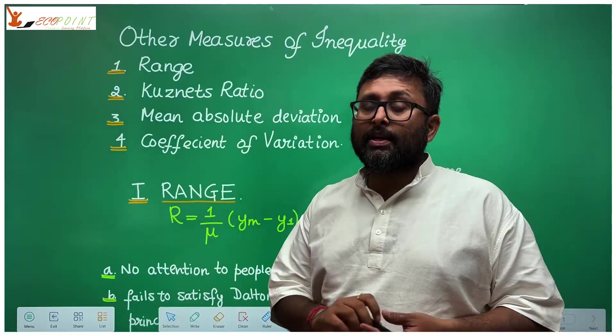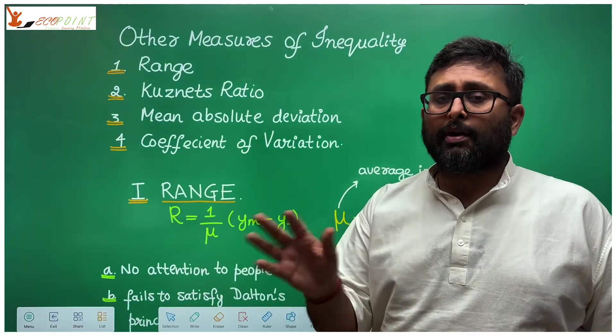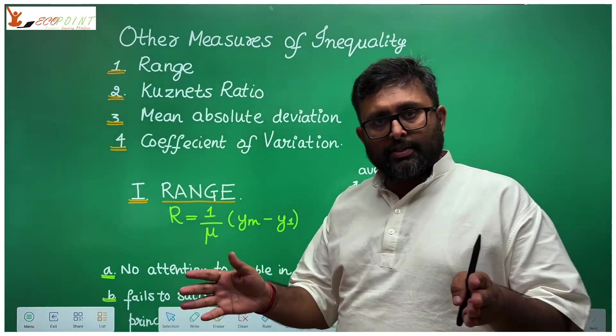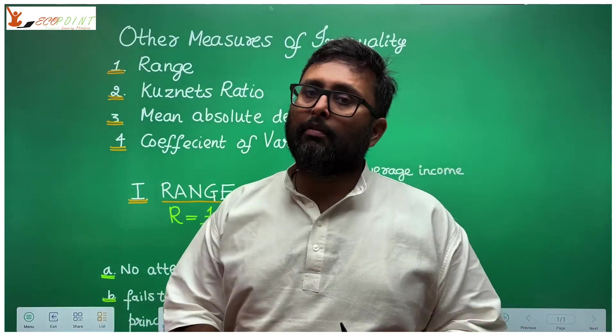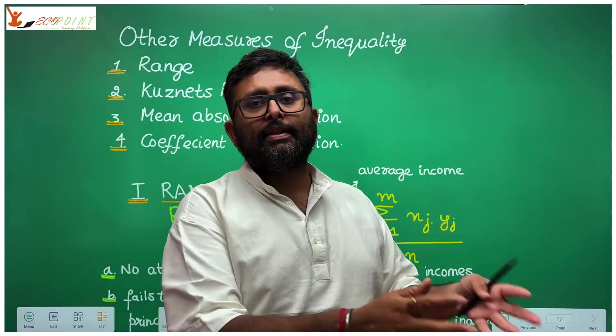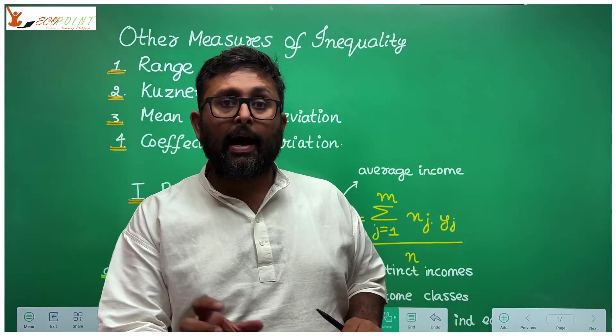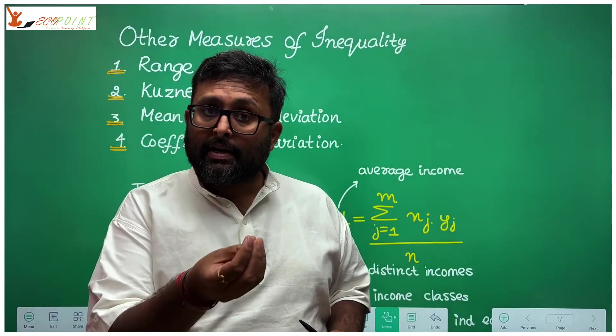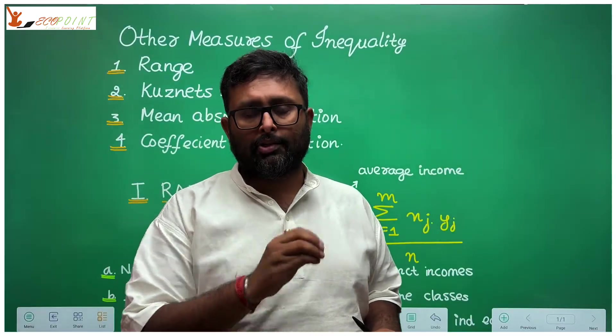In Lorenz Curve, the problem was it was not providing a number. If there are two countries, looking at the Lorenz Curve, in case it satisfies Lorenz criteria, I can just say one country is more unequal than the other country. I cannot say how much because it doesn't provide a number. That is one of the disadvantages of Lorenz Curve.